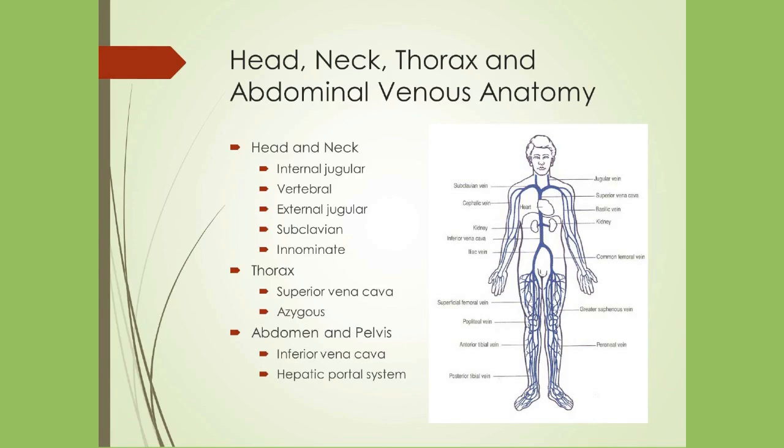From the head, neck, and thorax, the internal jugular vein provides the majority of venous drainage from the brain and joins the subclavian vein to form the innominate vein. The vertebral vein drains the posterior areas of the head. The external jugular drains the superficial areas of the head and neck and empties into the subclavian. The innominate vein joins to form the superior vena cava, which empties into the right atrium. Venous blood from the thorax empties into the superior vena cava from the azygous venous system. The inferior vena cava returns blood from the lower extremity and is formed by the right and left common iliac veins. The hepatic portal system drains blood from the stomach, intestines, spleen, and pancreas.